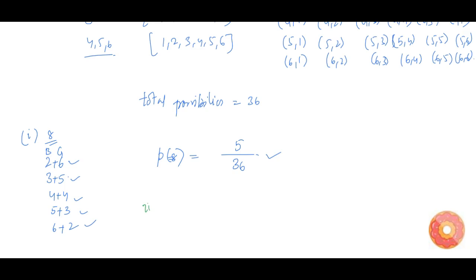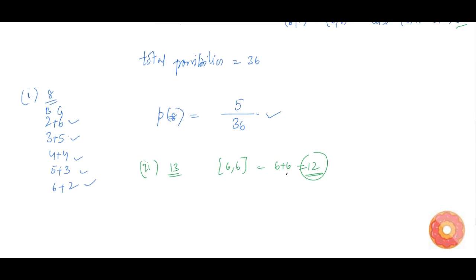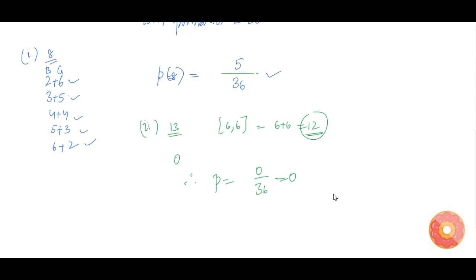Now let us do the second part of the question: the probability that the sum is 13. In the maximum case, we get six plus six, which gives a sum of 12. So the sum cannot be 13, which means the number of possible cases for the sum to be 13 is zero. Therefore, the probability is 0/36, which equals zero — the sum can never be 13 when rolling two dice.